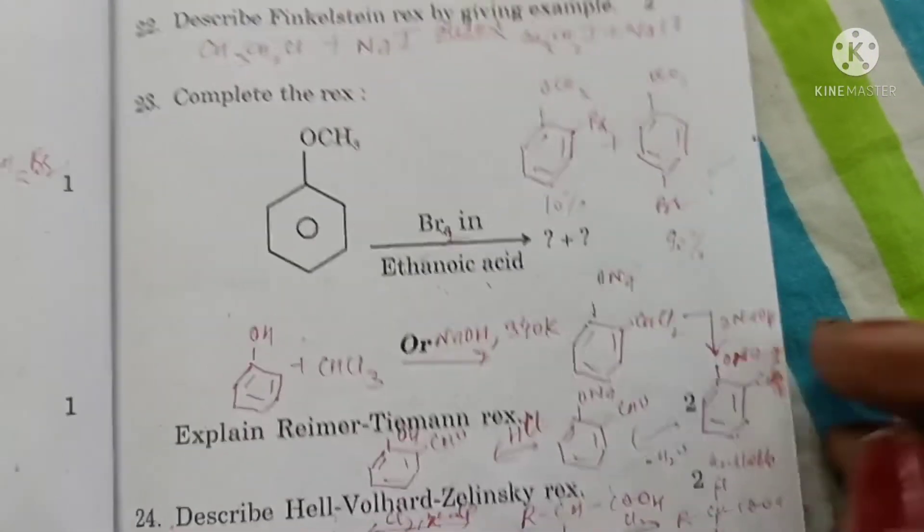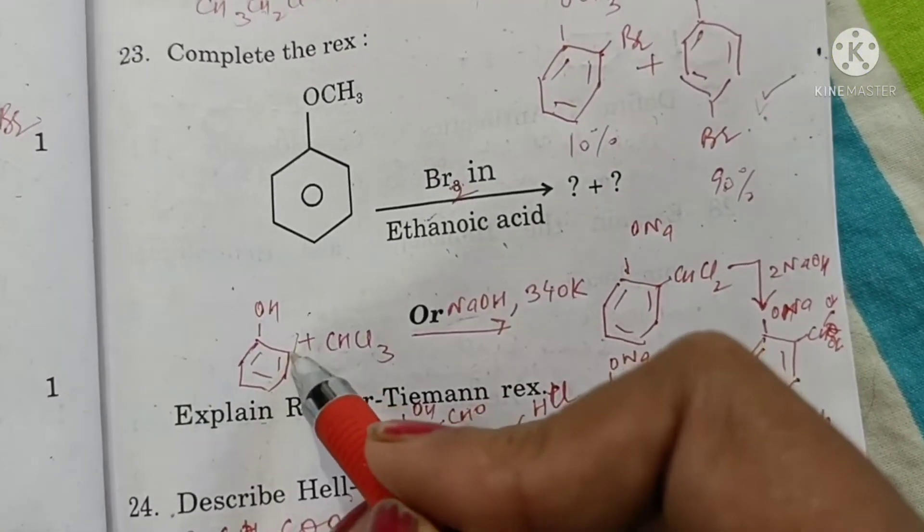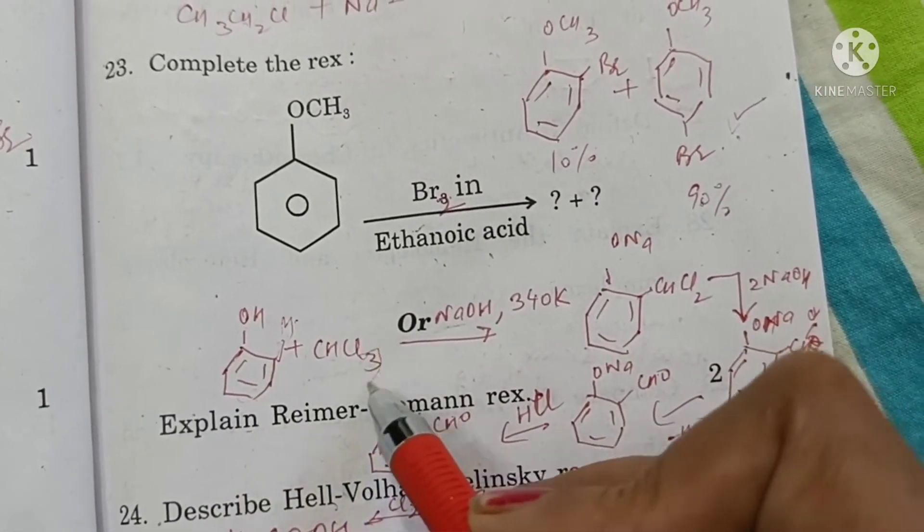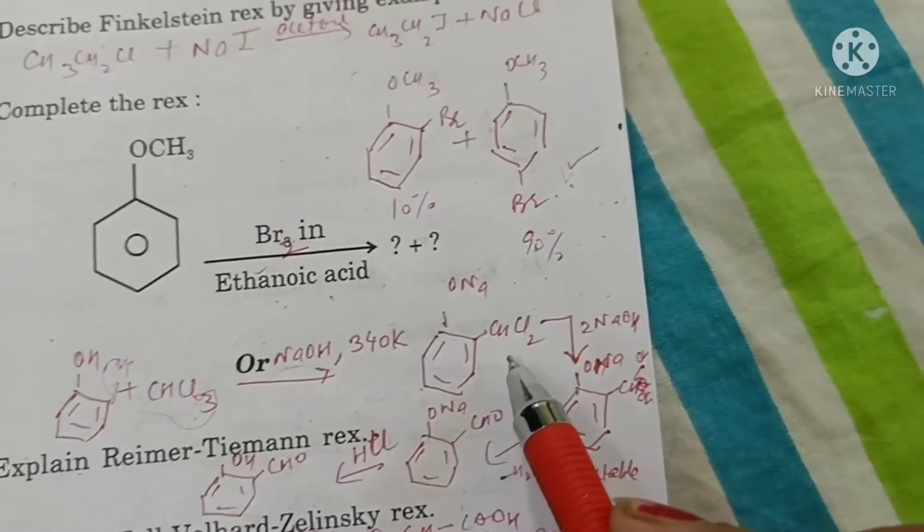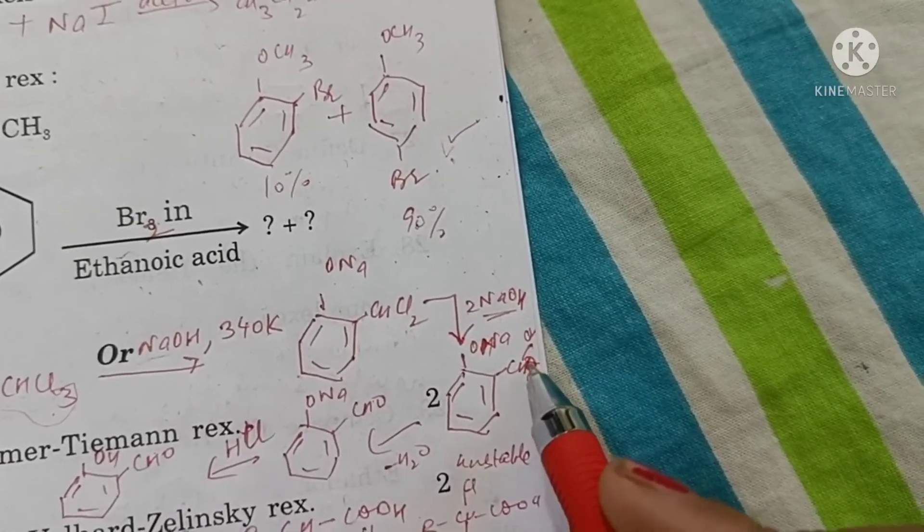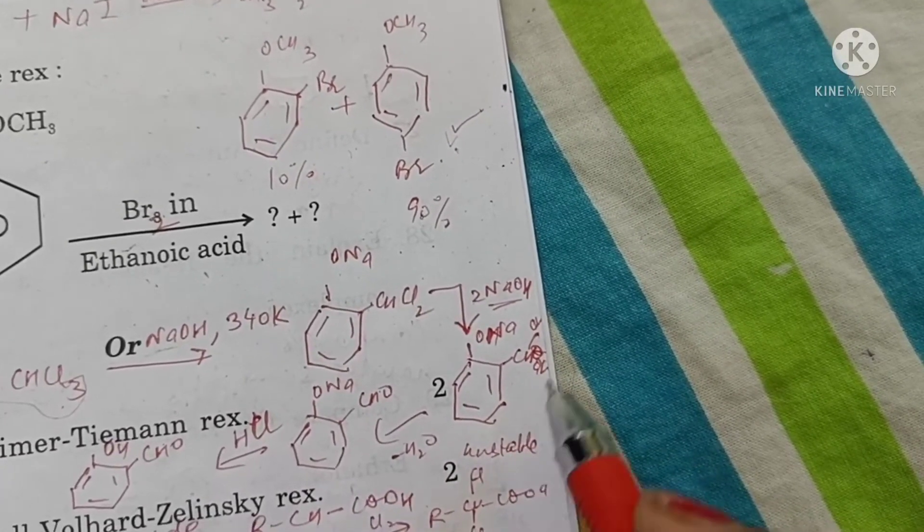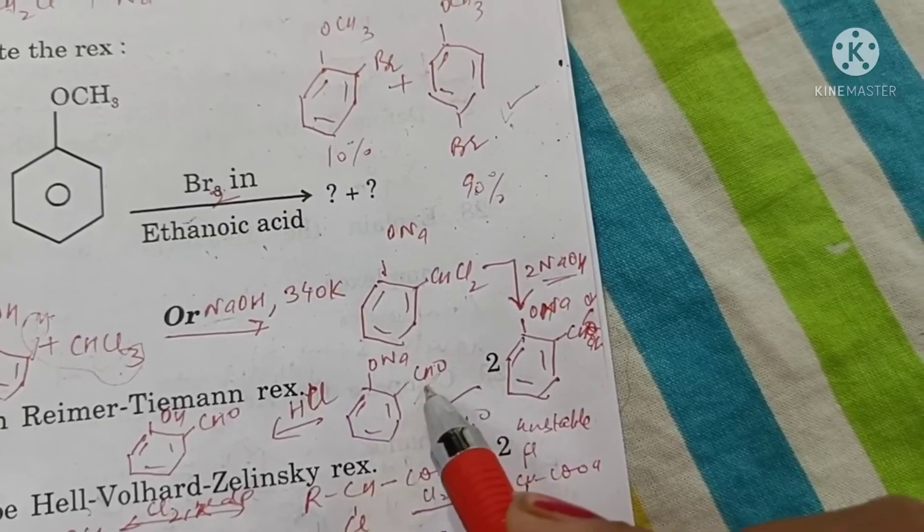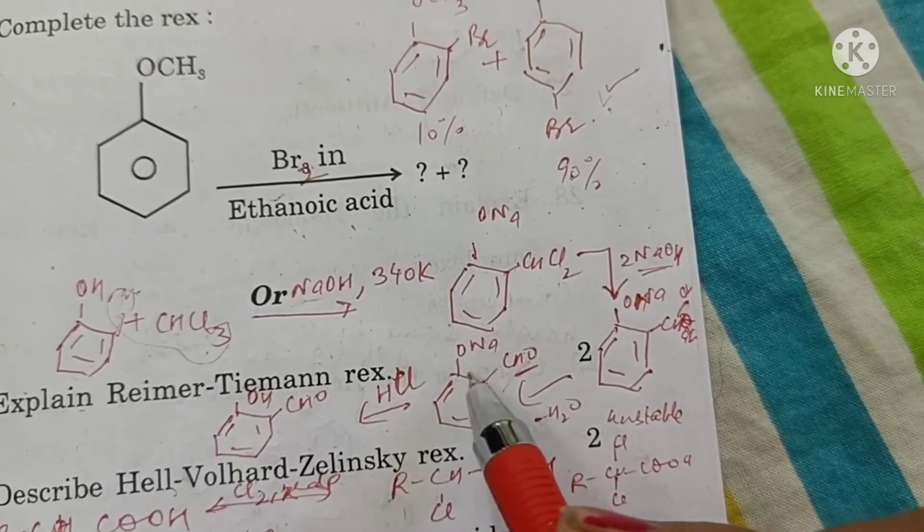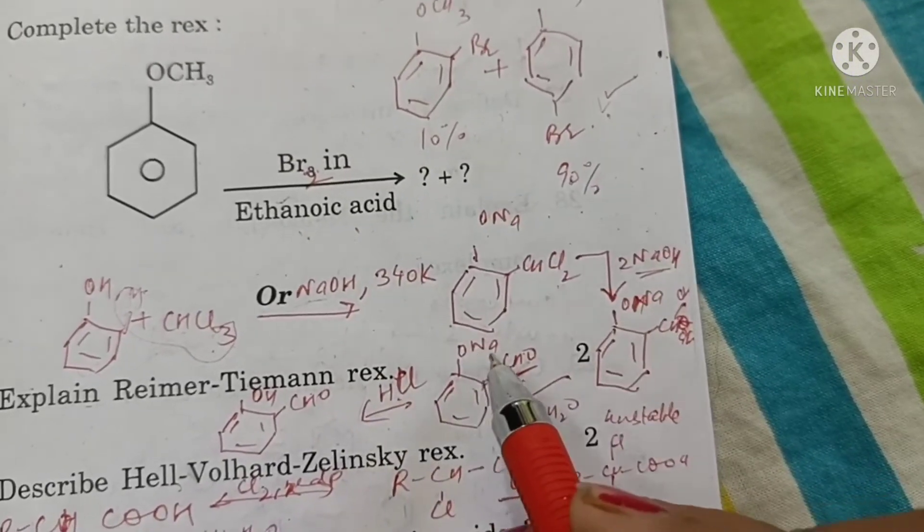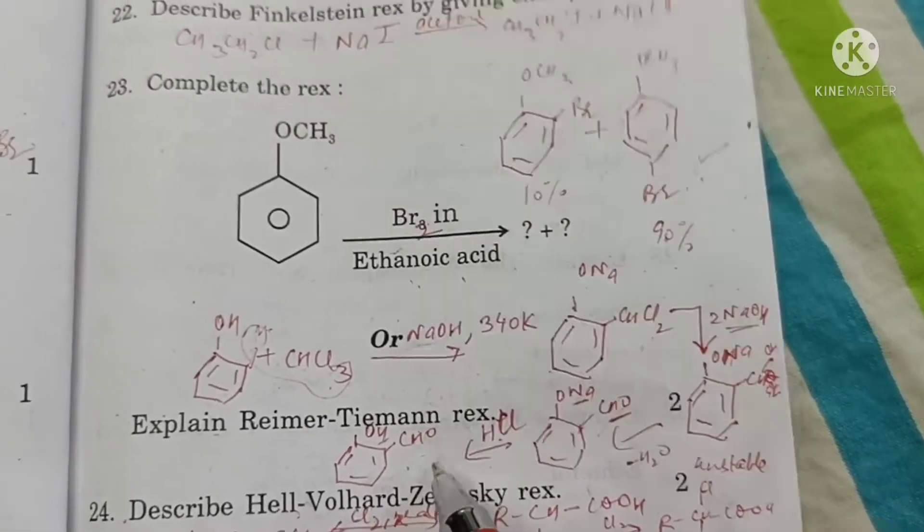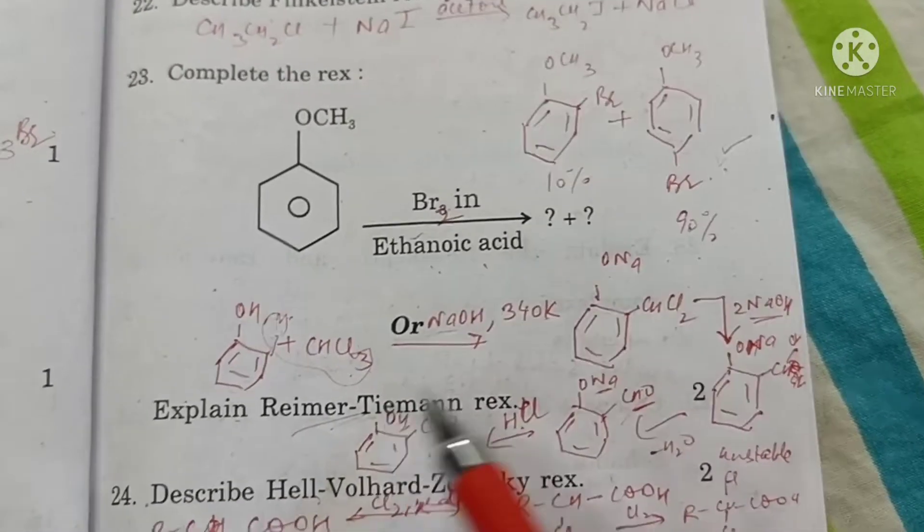When phenol is reacted with chloroform in presence of sodium hydroxide at 340 Kelvin, the H of ortho position of phenol and Cl combine to form HCl and CHCl2 gets attached. In presence of NaOH, these 2 Cl get hydrolyzed into 2 OH groups which is unstable. So they lose a water molecule to form aldehyde group at ortho position. This when on acidification with dilute acid will get converted into OH that is salicylaldehyde will be formed. This reaction is called Reimer-Tiemann reaction.